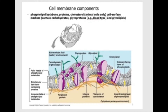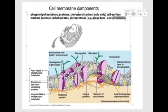The next component is cell surface markers, which contain carbohydrates — simple sugars or complex carbohydrates like cellulose or starch. In this group, we have glycoproteins and glycolipids. 'Glyco' indicates sugar, so glycoproteins are complexes of sugar and proteins, while glycolipids are molecules that have both a lipid component and a sugar component. So a glycoprotein has the carbohydrate component attached to a protein, and glycolipids have the sugar component attached to the lipid component.